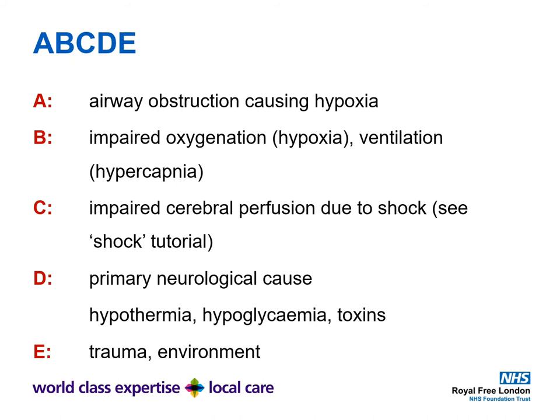To summarise the ABCDE assessment: in Airway, look for obstruction causing hypoxia, impaired oxygenation through a hypoxic cause, or impaired ventilation causing hypercapnia. In C, look for impaired cerebral perfusion due to shock — remember the brain requires a constant supply of blood, oxygen, and glucose. In D, look for a primary neurological cause such as head injury, and also consider hypothermia, hypoglycaemia, and toxins. In E, look for trauma and any environmental causes of reduced level of consciousness.